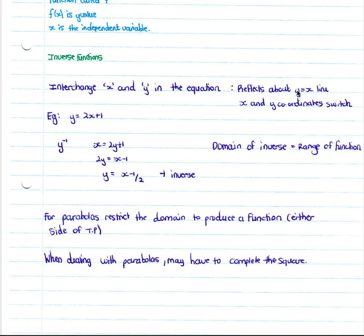When we look at inverse functions, you simply interchange your x and y in the equation. It reflects about the y equals x line, and your x and y coordinates switch. For example, if you have the graph y equals 2x plus 1, to get the inverse we replace y with x and x with y: x equals 2y plus 1. We solve to get y on its own and get y equals (x minus 1) over 2, which is the inverse. The domain of your inverse is the range of your function, and the domain of your function is the range of your inverse.